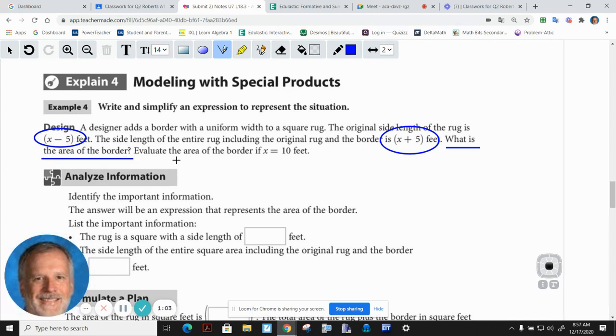And evaluate the area of the border if x equals 10 feet. So I've got really two problems to try to dig into. Let's see if we understand what it's saying. The original length of the rug was x minus 5 feet, and it is a square rug. So I'm gonna put a square around the word square, which means if I'm going to find the area, then I would have to take the original side x minus 5 and multiply it times itself. That's how I find the area of a square: side times side.